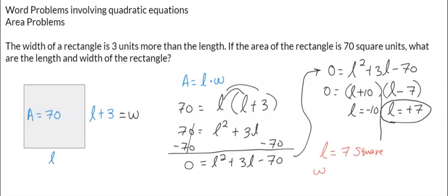Now the width, which is L plus 3, is actually 7 plus 3, which is 10 square units. So our length is 7 square units and our width is 10 square units. And when you see the area, 7 times 10 does give us 70.